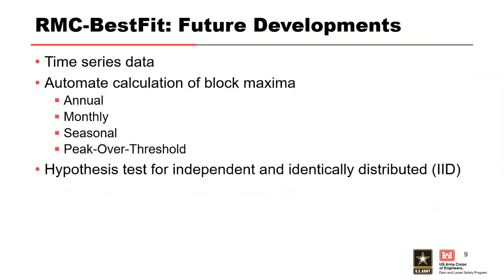I want to briefly mention a few future developments that are going to be available in the next version of RMC Best Fit. There will be several additional options for input data. It will allow the user to enter a period of record time series data so that all data prep can be handled within RMC Best Fit. Currently we do a lot of processing outside in HEC-DSS View, HEC-SSP, or Microsoft Excel, but we want everything housed within one piece of software. Eventually users will be able to develop block maximum data for annual, monthly, seasonal, or peak-over-threshold data, manipulate data for moving average like volume duration, and perform hypothesis tests to ensure samples are independent and identically distributed.